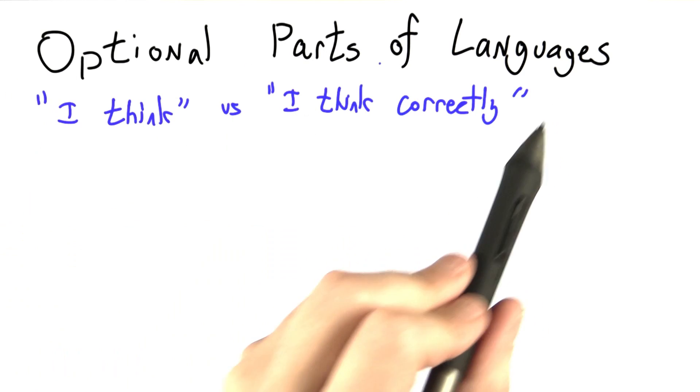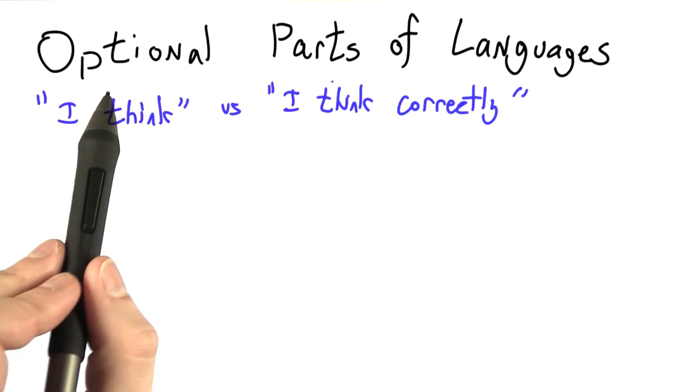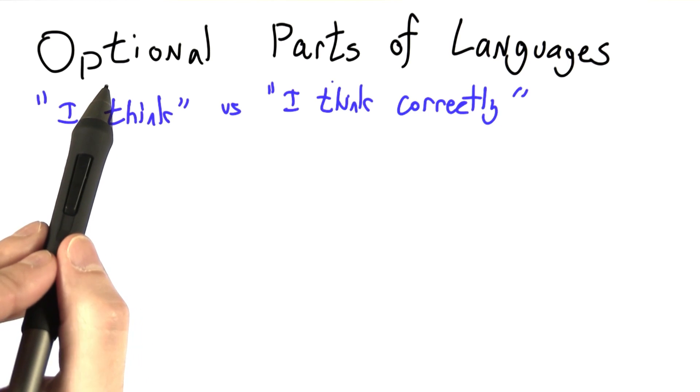Often, both natural languages and programming languages have optional parts that don't have to appear in every utterance.